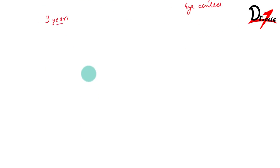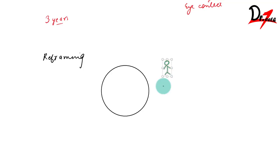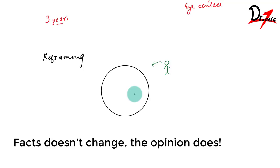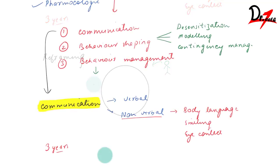Then we have reframing. Suppose a child had an unpleasant dental experience in the past. You create a situation where you take the child out of the opinion he was having and show him a different perspective of that situation. The facts are not changed, but the opinion the child has about it will change. For example, connecting it to daily life: when it is cold we wear warm clothes to remain comfortable — the dentist is trying to create a different reality.